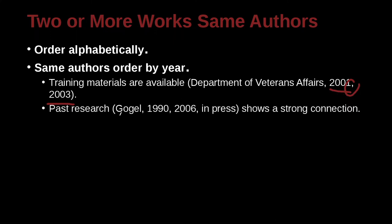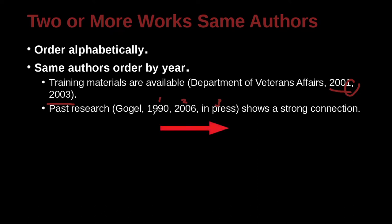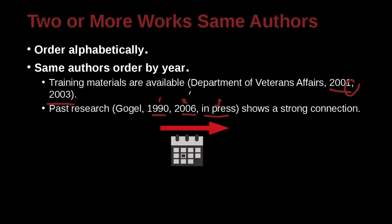How about this example? Past research (Google, 1990, 2006, in press). Now we have three papers, and we order them by the earliest date first. "In press" means the paper is at the publishers but not finished yet.